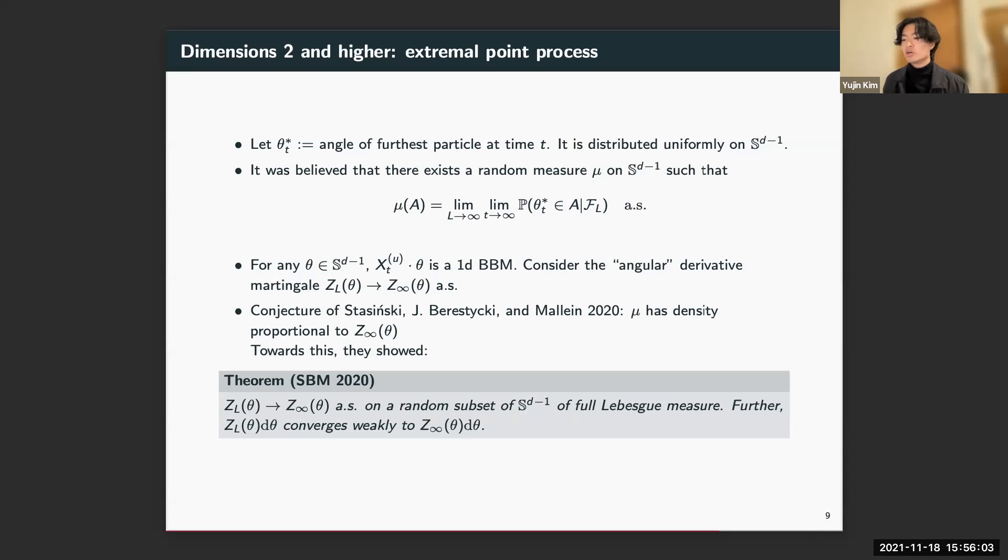Towards this, they were able to show that almost surely on a random set of the sphere of full measure, this angular derivative martingale converges. Furthermore, viewed as a measure on the sphere, Z_ℓ(θ) converges weakly to Z_∞(θ)dθ, so dθ is just Lebesgue.